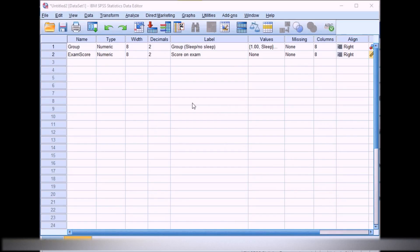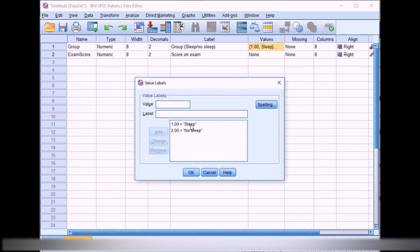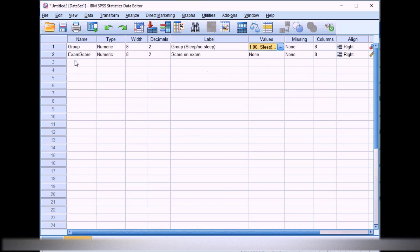We go into SPSS. I've created a data file here with this data. You can see I've got the group as one variable. We're in variable view at the moment. Group is the first variable that just defines which group the participant's in. I've labeled these with values one for sleep and two for no sleep. The second variable represents exam score, so the dependent variable.